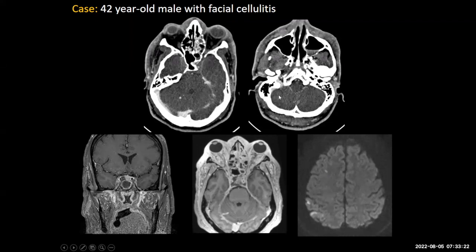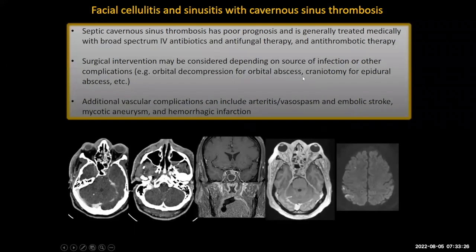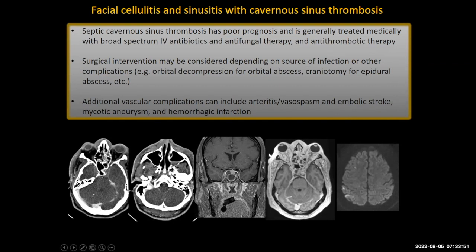Facial cellulitis and sinusitis with cavernous sinus thrombosis — the offending pathogen was likely mucormycosis. Septic cavernous sinus thrombosis has very poor prognosis and is treated medically with broad-spectrum IV antibiotics, antifungal therapy, and antithrombotic therapy. Surgical intervention may be considered depending on the source or complications — orbital decompression if there's orbital mass effect, or craniotomy for intracranial abscess. Other vascular complications that can occur include arteritis and vasospasm with embolic stroke, mycotic aneurysms, and hemorrhagic infarction.